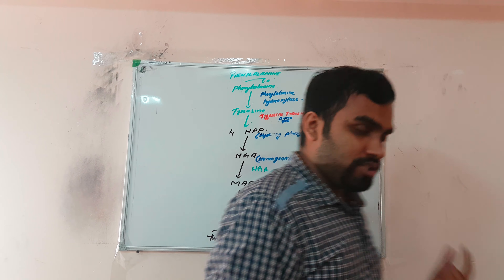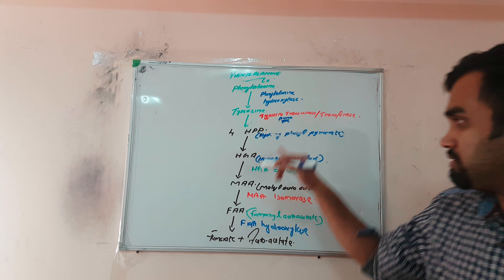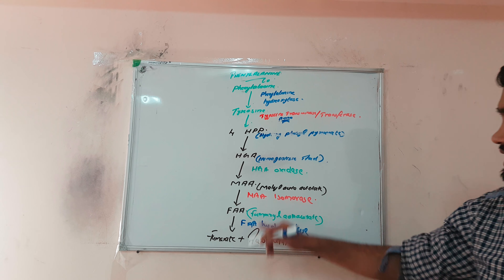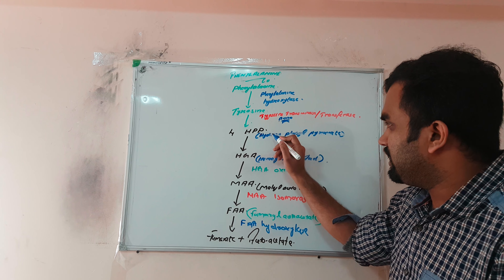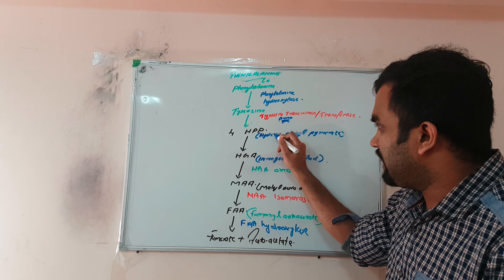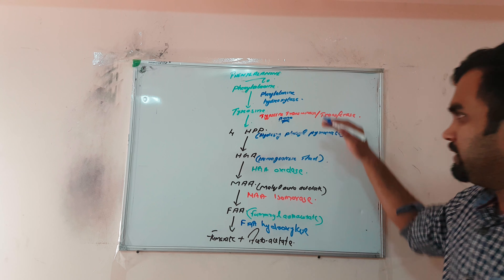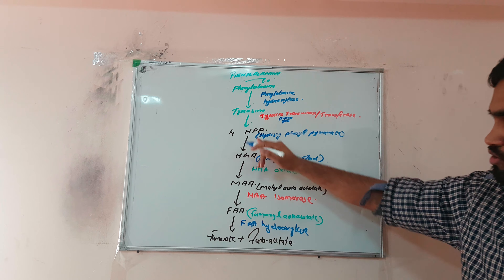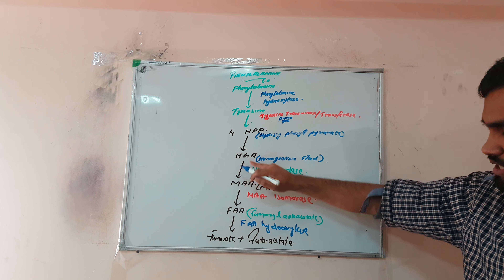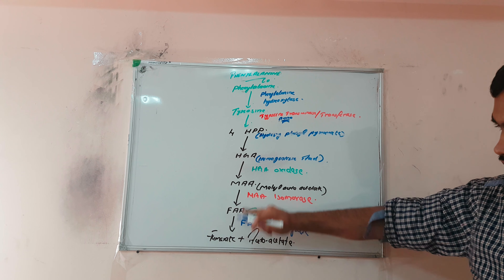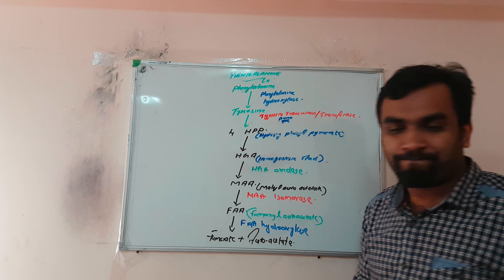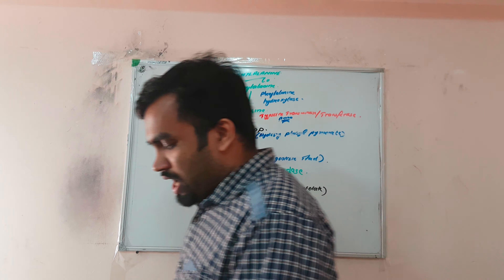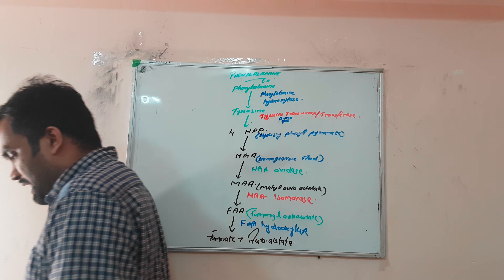Now you have to study this flowchart — it is very easy. 4-hydroxy phenyl pyruvate, everything is easy. Remember: party, gana, MAA, FAA, splitter. Very easy to remember.